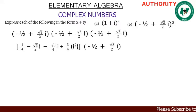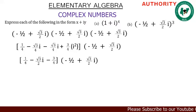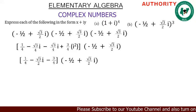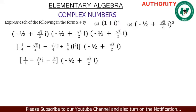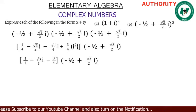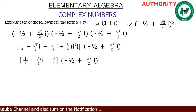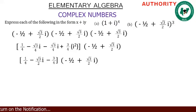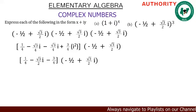Adding the real parts: 1/4 minus 3/4 gives us minus 1/2. So the expanded first two brackets simplify to: −1/2 − (√3/2)i. The remaining third bracket from our original expression is: −1/2 + (√3/2)i. So we now have two simpler brackets to multiply: (−1/2 − (√3/2)i) times (−1/2 + (√3/2)i).